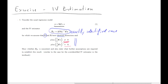Let me briefly review the probability limit term with reference to our parameter estimate, beta hat IV. What we want is a consistency argument — we want beta hat IV to be close to the true population parameter beta. Specifically, we want the difference between these two to become very, very small.